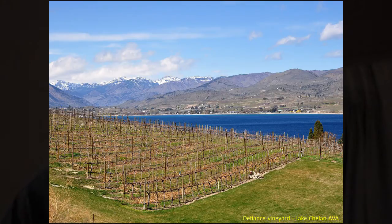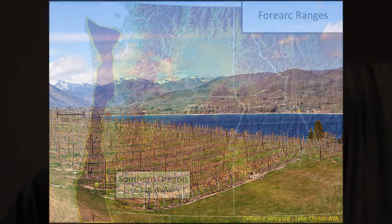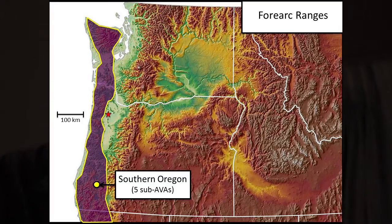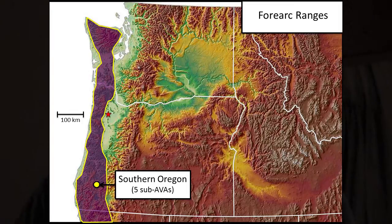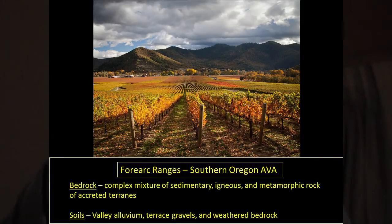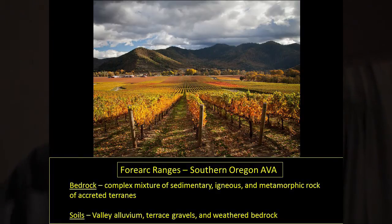For the forearc ranges, viticulture in southern Oregon's Rogue River Valley and Umpqua Valley takes place in valleys incised into forearc ranges with very complex geology. The Rogue Valley bedrock is a complex mixture of many different rock types that were accreted to North America. The soils are primarily valley alluvium and terrace gravel, and viticulture is mostly down near the valley floors.